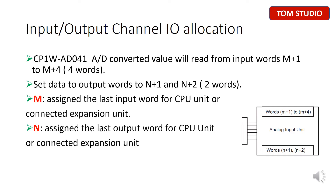In this slide, we are talking about the CP1W-AD041 Analog module channel I/O allocation. The manual shows that the CP1W-AD041 Analog module requires 4 words for each channel reading, which means the converted value will be read from those 4 words. In the meantime, it also requires another 2 words for setting up the signal range, resolution, signal type, etc. So it is very important to fully understand how to assign input and output words for the CP1W-AD041 Analog module.